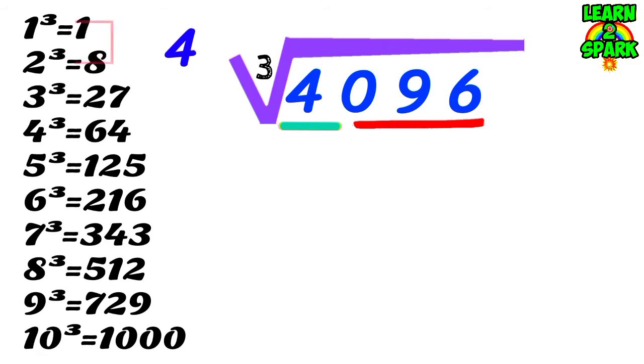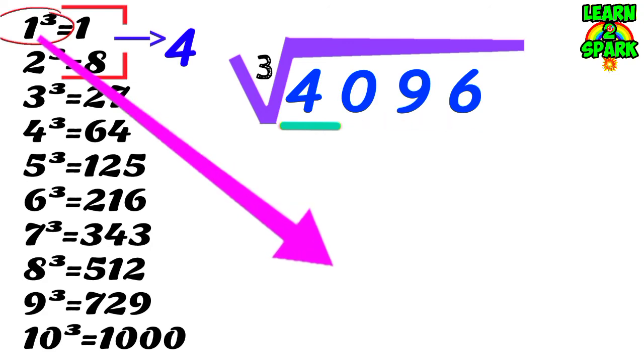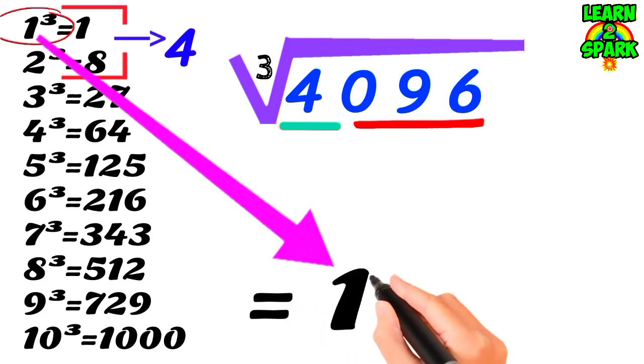Consider the first group which contains 4, which falls between 2 perfect cube numbers, that is 1 and 8. Always take the cube root of the smallest number between the given 2. Here it is 1. Take down 1 for the final answer.